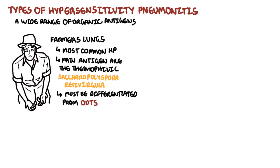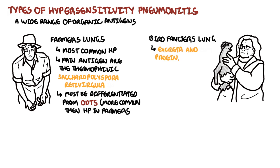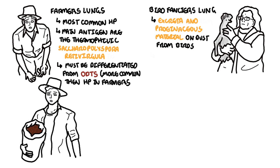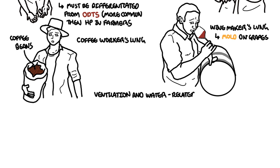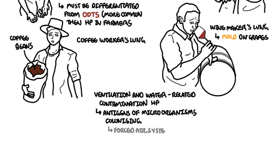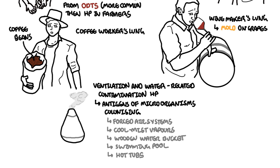Bird fanciers are also a group known to develop hypersensitivity pneumonitis, causing what's called bird fanciers' lung. This is induced by exposure to excretions, certain materials, and dust particles from specific birds. Another cause is from coffee grains, called coffee workers' lung, and from molds on grapes, causing winemakers' lung. There is also ventilation and water-related hypersensitivity pneumonitis, caused by exposure to microorganisms colonizing airway systems, vaporizers, wooden water buckets, swimming pools, hot tubs, and shower curtains.